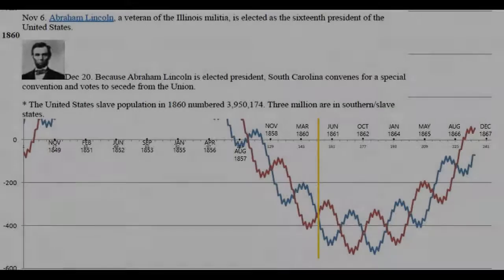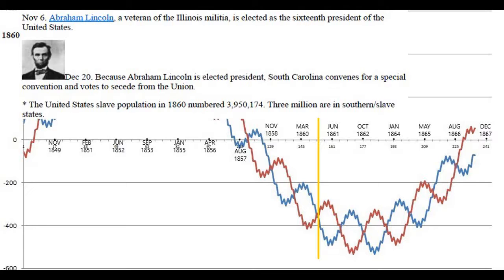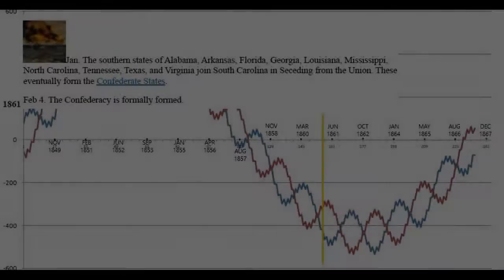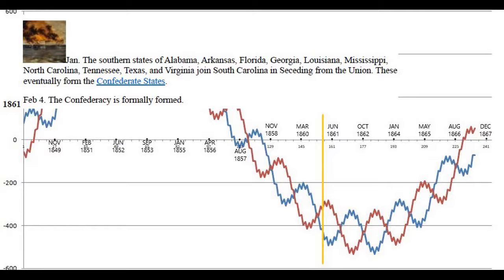On November 6th, 1860, Abraham Lincoln is elected as the 16th president of the United States. On December 20th, because Lincoln is elected, South Carolina votes to secede from the Union. The slave population in 1860 numbered approximately 3,950,174, with about three million in southern slave states. Into 1861, the southern states of Alabama, Arkansas, Florida, Georgia, Louisiana, Mississippi, North Carolina, Tennessee, Texas, and Virginia join South Carolina in seceding, eventually forming the Confederate States. The Confederacy is formally established on February 4th.